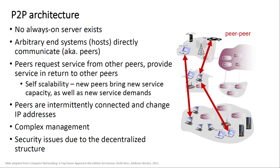In the peer-to-peer (P2P) architecture, there is no always-on server. Arbitrary end systems called peers directly communicate with each other. Peers request and provide services to one another — new peers bring new service capacity as well as new service demands, giving good scalability. This is how file-sharing applications and torrents work. However, since peers are intermittently connected and change IP addresses, it becomes complex to manage, and decentralization raises security issues.